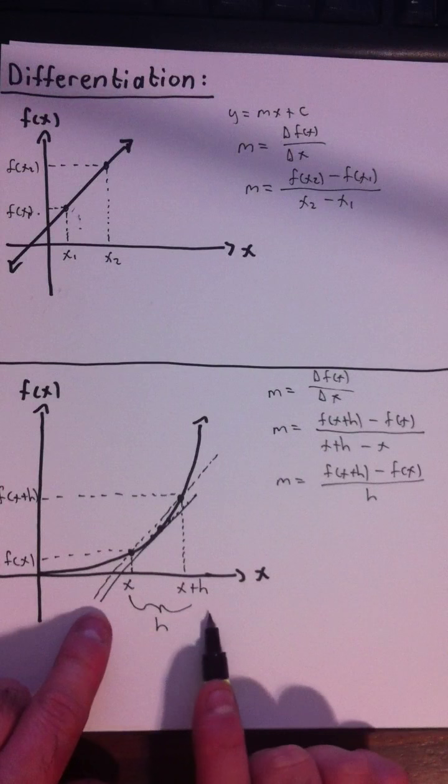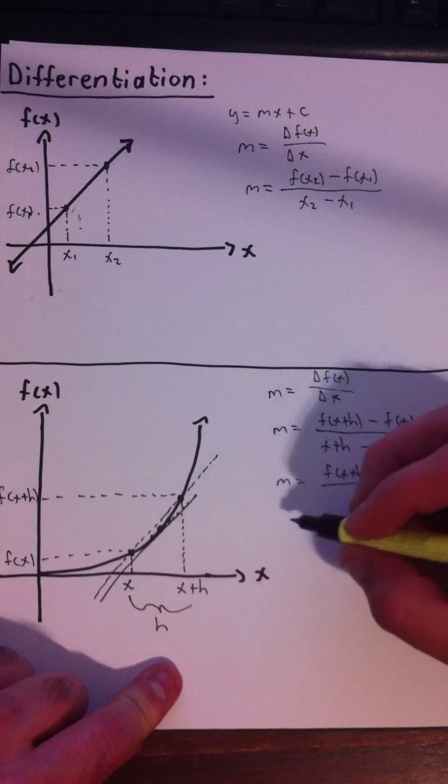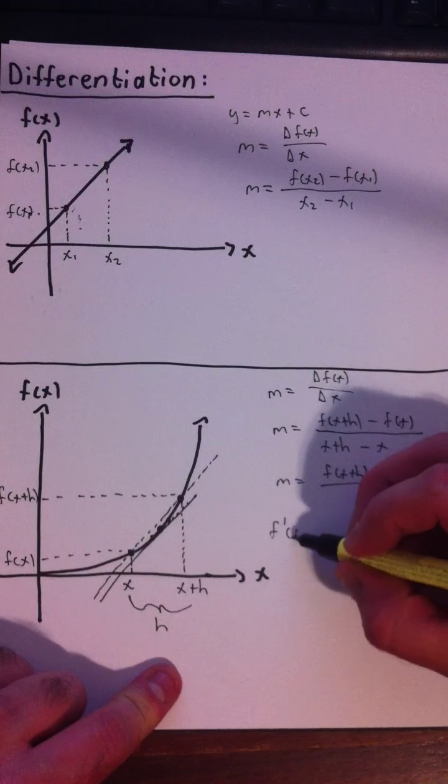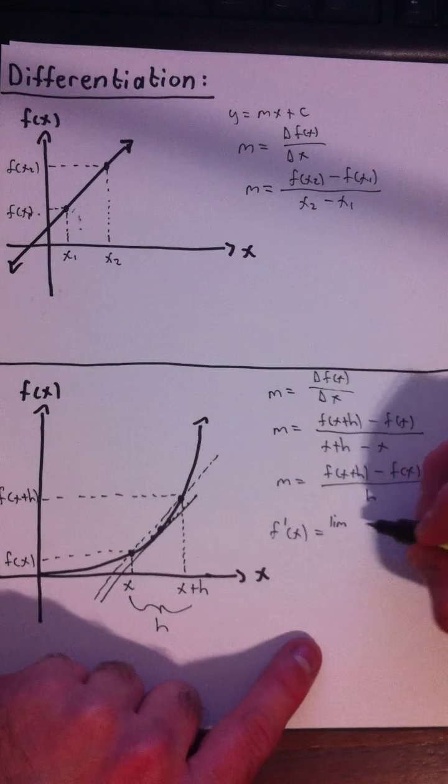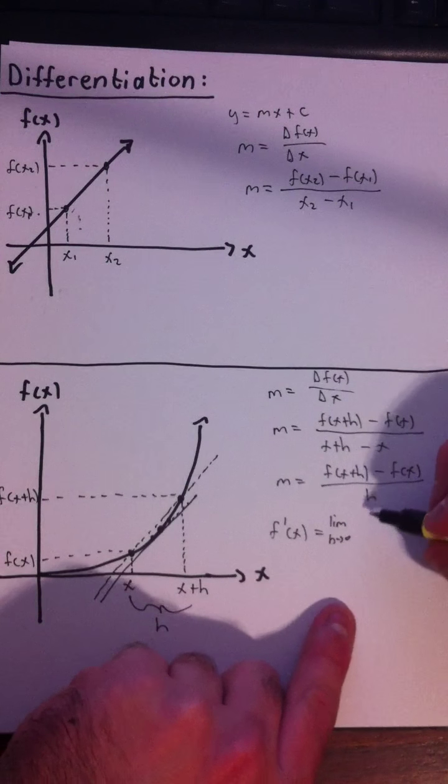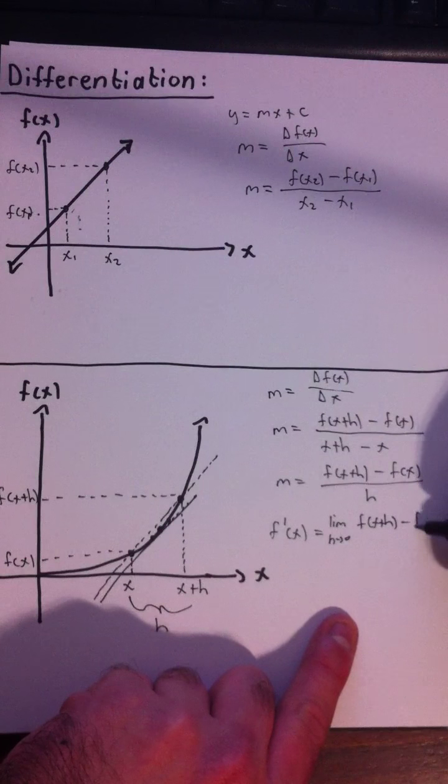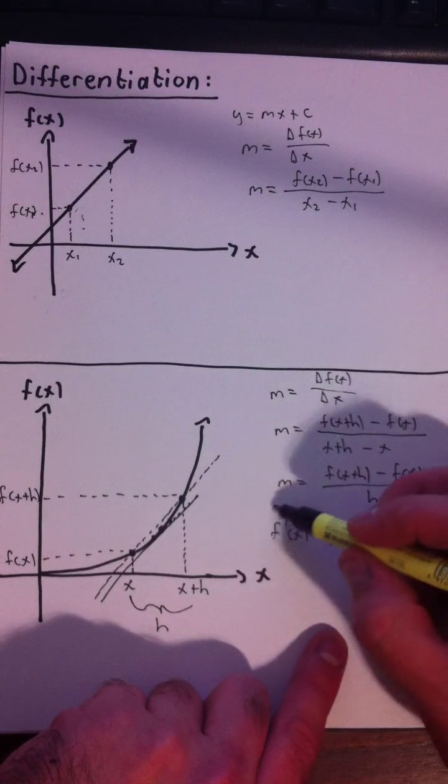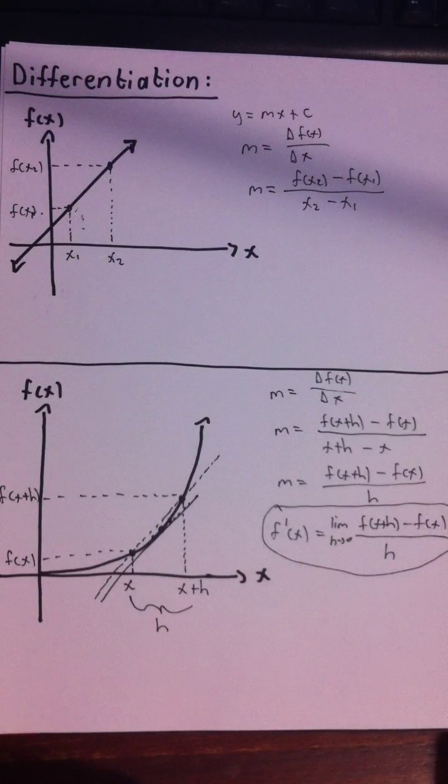Now how do we do that? We just make this h, the distance between them, smaller and smaller. So the definition of a derivative, which is the gradient, is just that f prime of x, which is our notation for a derivative, is equal to the limit as h approaches zero, as that becomes very small, of what we wrote here, f of x plus h minus f of x divided by h. And this is the definition of a derivative. That's called the first principles of differentiation.